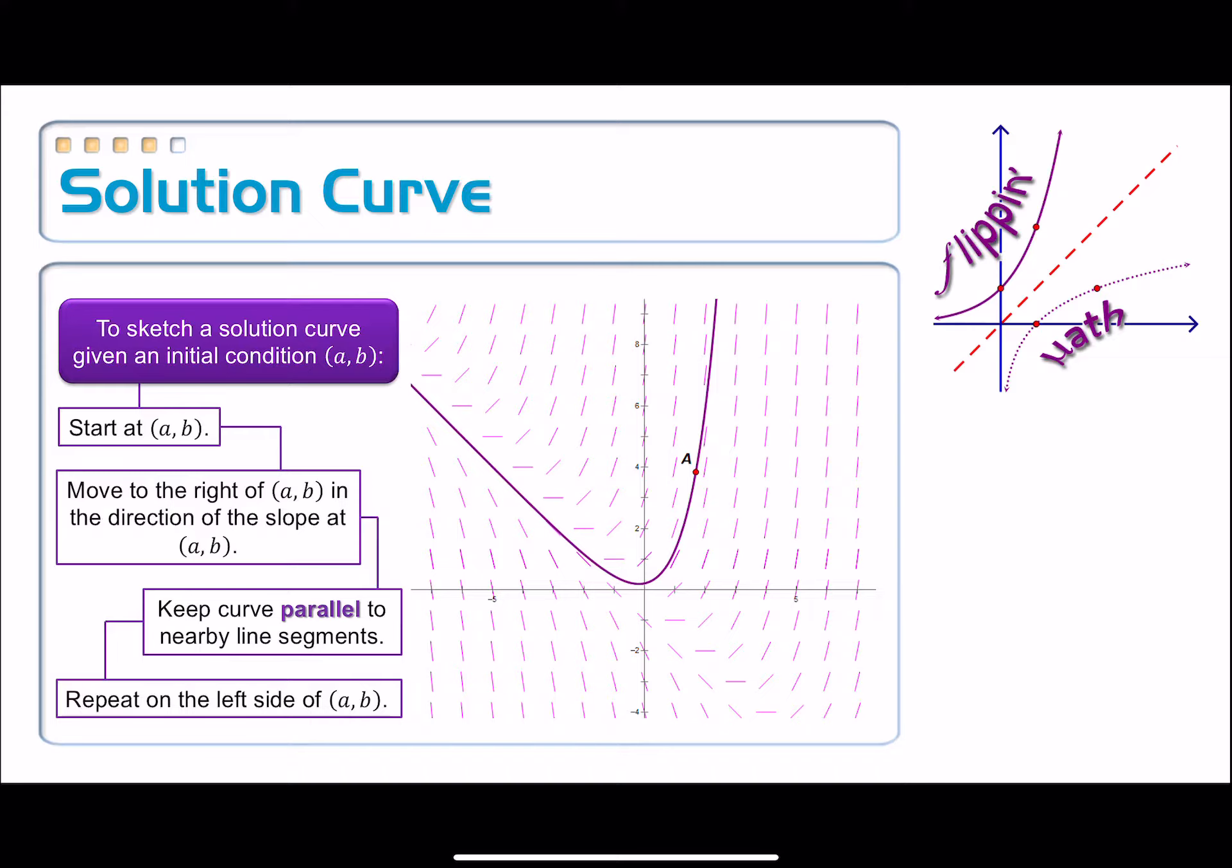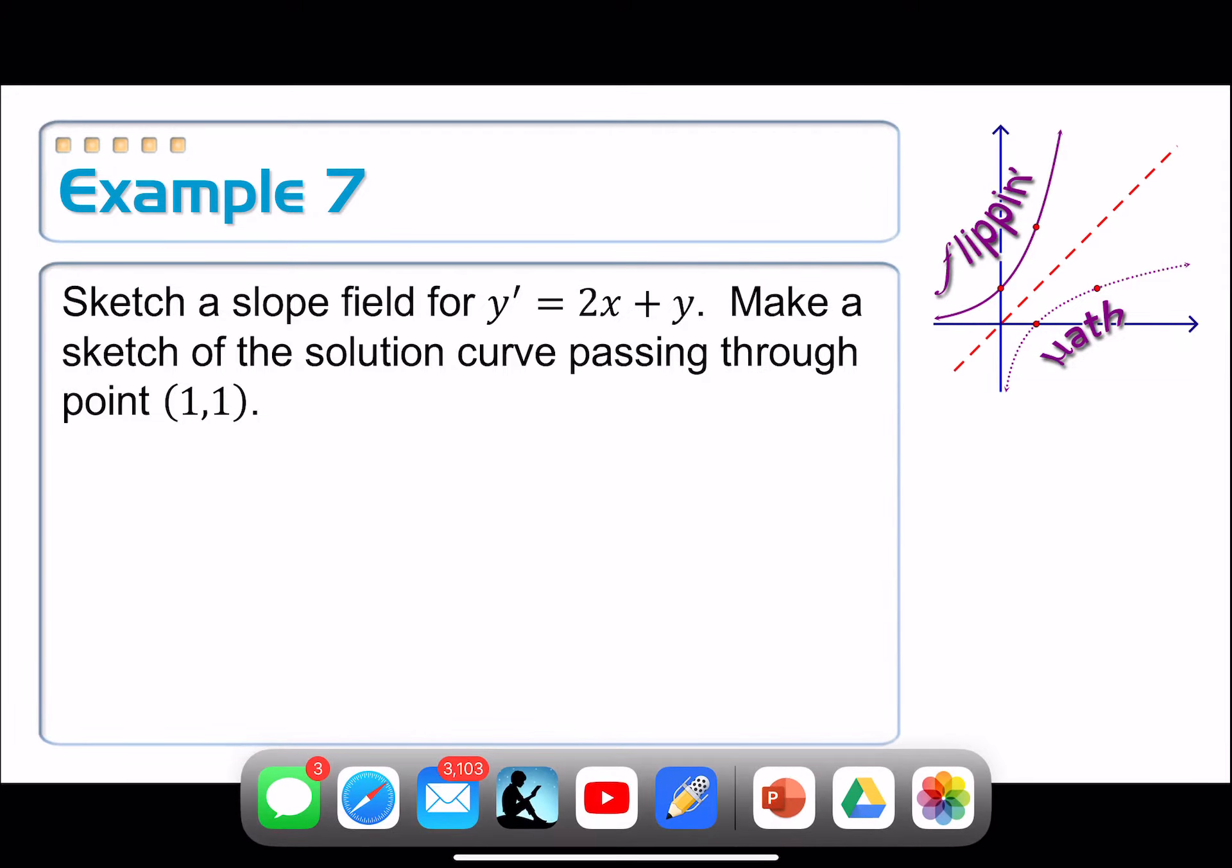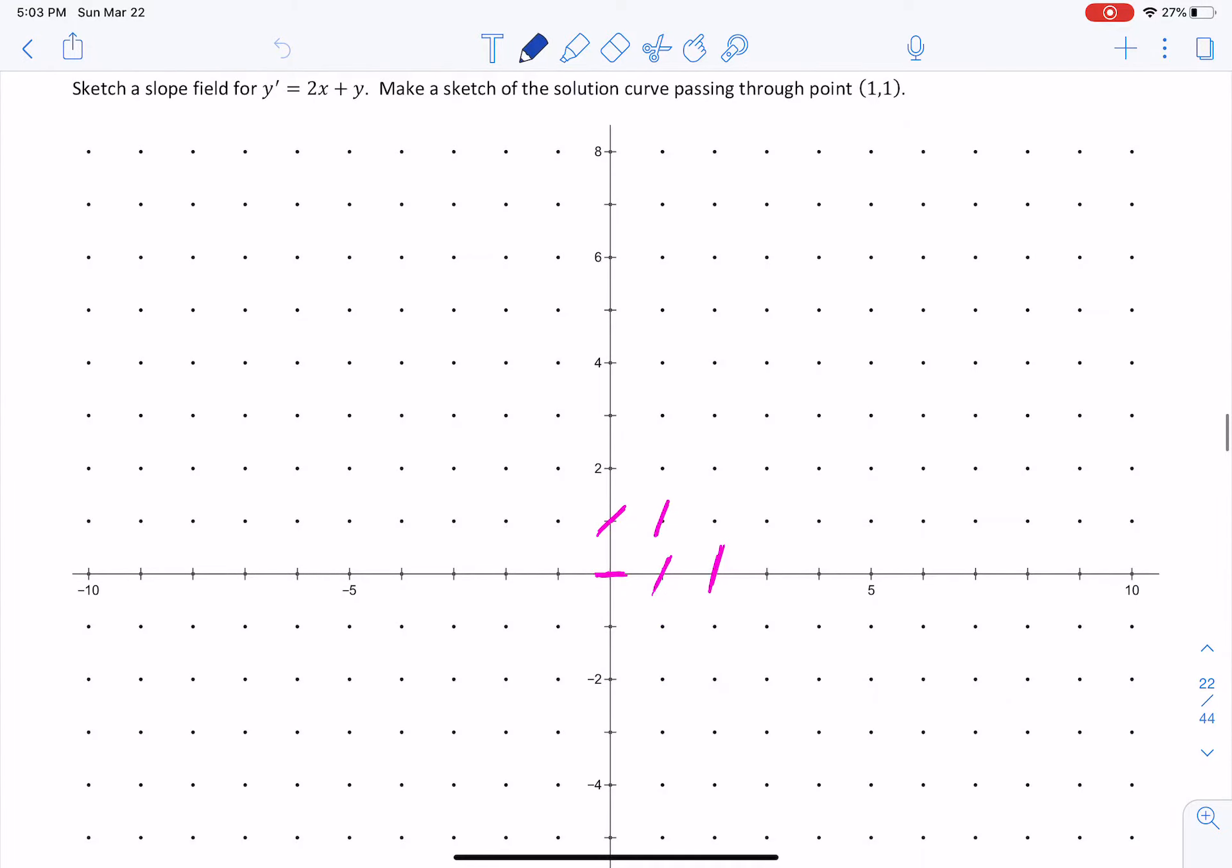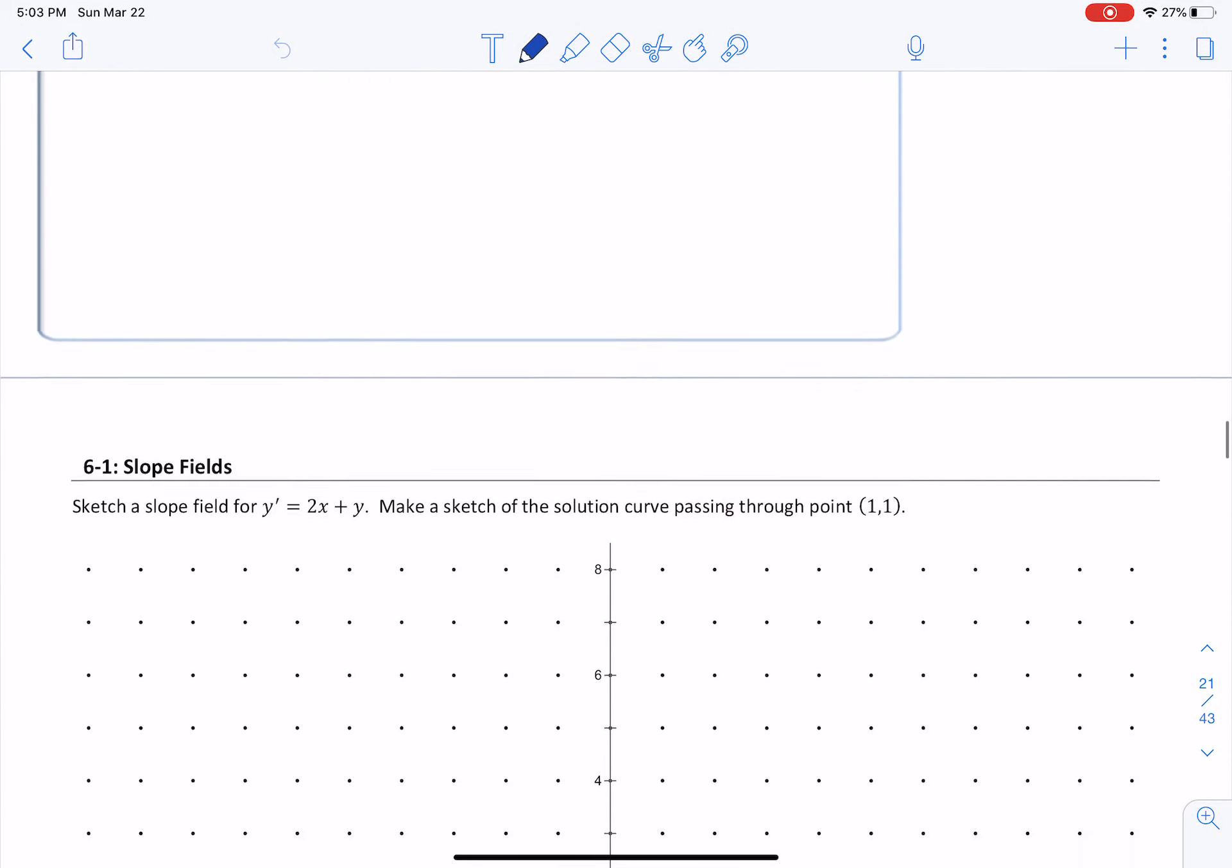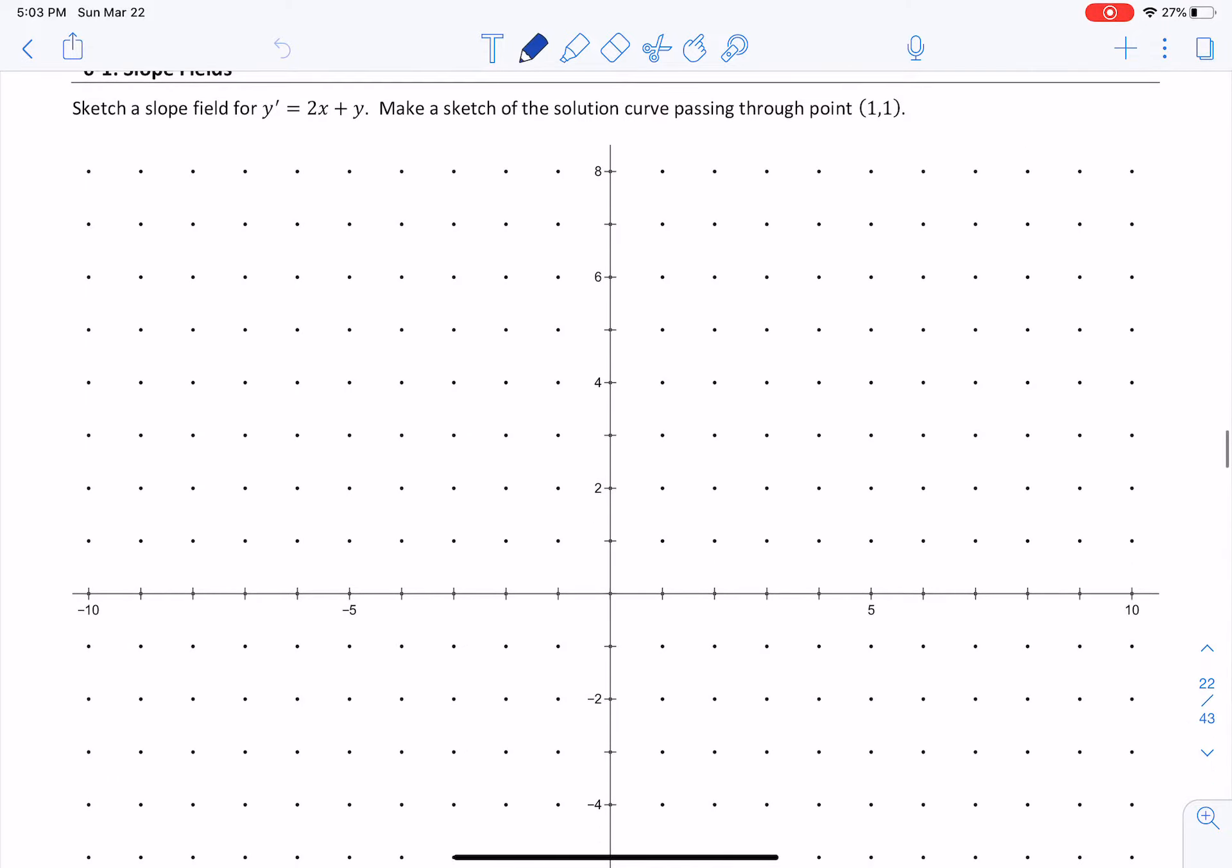Let's give that a try, and this is where that worksheet is going to come in. Sketch a slope field for y' = 2x + y. Make a sketch of the solution curve that passes through the point (1, 1). If you have a printout of that slope field—for some reason do I have this wrong one up? I do. Yeah, I already had the answer though.